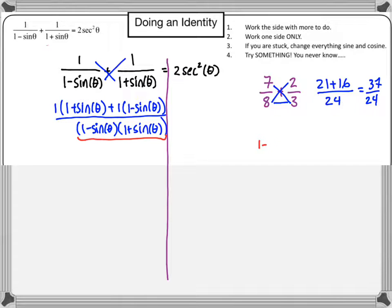1 plus sine theta, and after I foil all this out, I'm going to do it out real quick. There it is all foiled out.